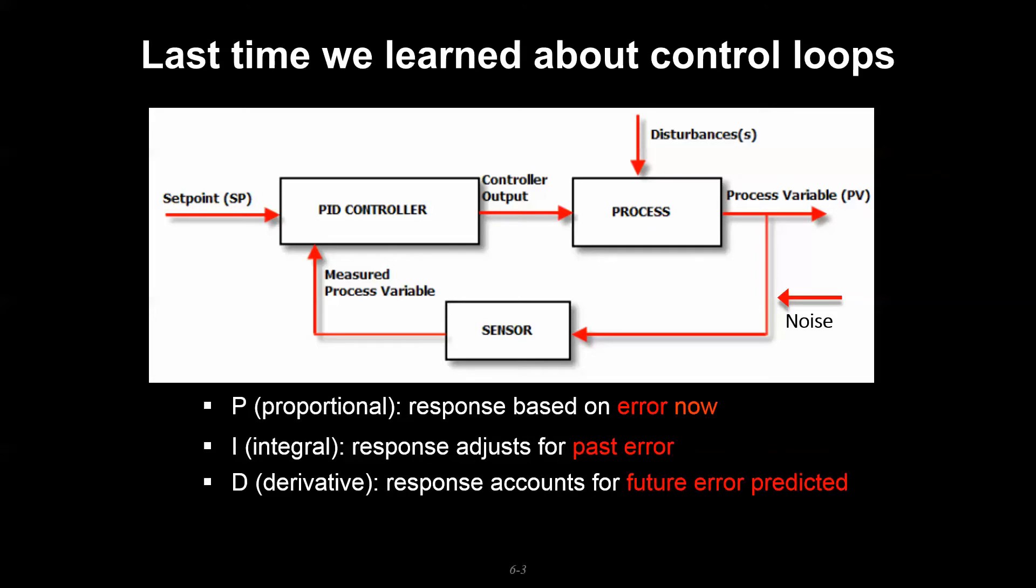We looked in the last video at some of the theory behind control loops, specifically how something like a PID controller can take feedback data coming from a sensor, input that into a controller, compare it to setpoint information, generate an error, and then adjust the magnitude of the controller output to achieve some process variable change.